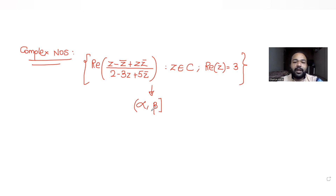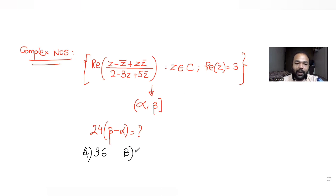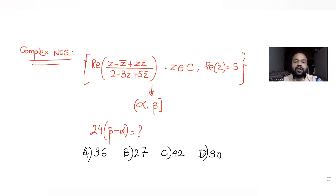So let's figure that out. We have been asked to find the value of 24 times (beta minus alpha). We need to figure out which of the following four options is the correct one, so we need to determine the value of this entire expression.